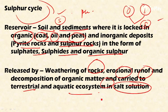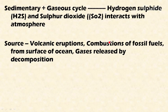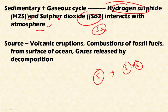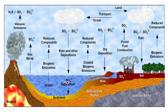The most important characteristic of the sulfur cycle is that it acts both as a sedimentary cycle and as a gaseous cycle. Hydrogen sulfide (H₂S) and sulfur dioxide (SO₂) also interact with the atmosphere alongside the sedimentary cycle. Sources of sulfur include volcanic eruptions, which contribute sulfur to the atmosphere, combustion of fossil fuels, release from the surface of oceans, and gases released by way of decomposition. Volcanic eruptions release H₂S and SO₂ into the atmosphere.